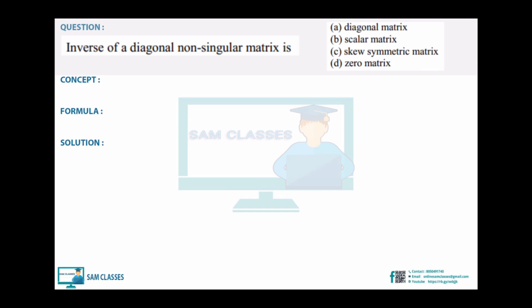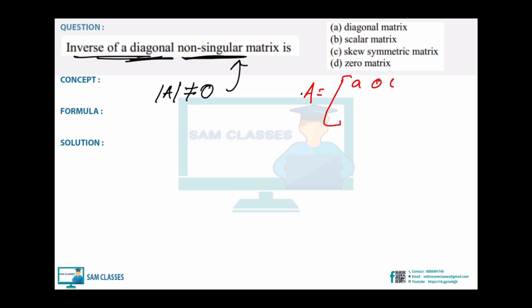Last question: inverse of a diagonal non-singular matrix. Non-singular means det(A) ≠ 0, so the inverse exists. There's a cheat/theorem for this.